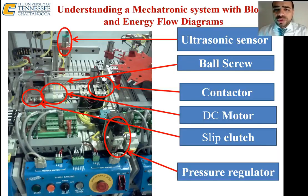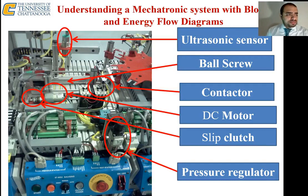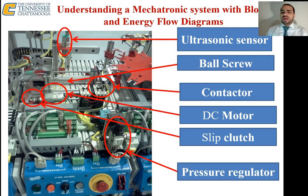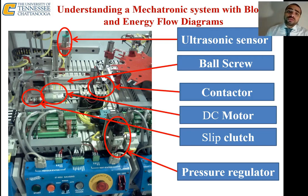Now, understanding a mechatronic system with block and energy flow diagrams. When troubleshooting equipment, the first thing you need to do is understand how it works — you cannot troubleshoot something you've never seen working. You need to see the equipment running or at least know how it works. If it's a manufacturing system, you need to see it running.